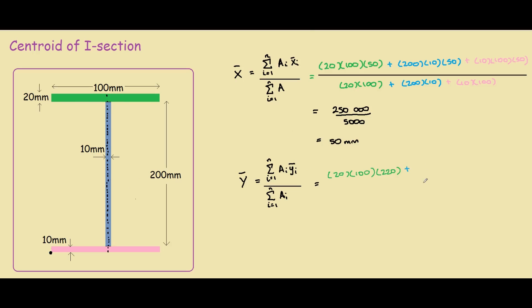For our blue section, the area is 200x10, and the centroid from the reference point is 10 plus 100. 100 is half of the blue's y-axis, so 10 plus 100 is 110.